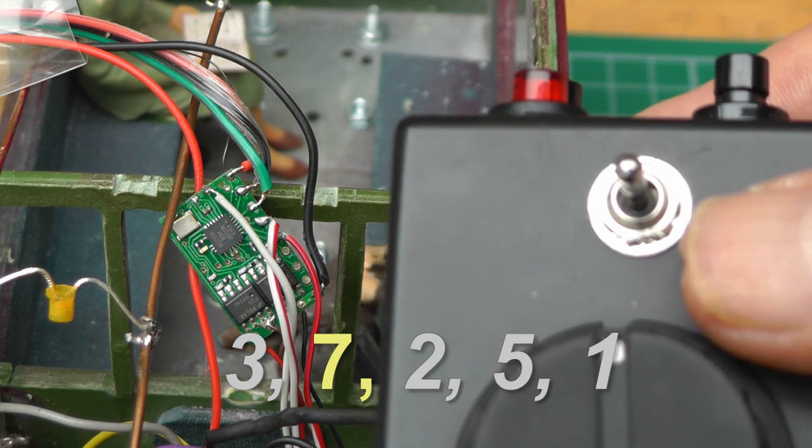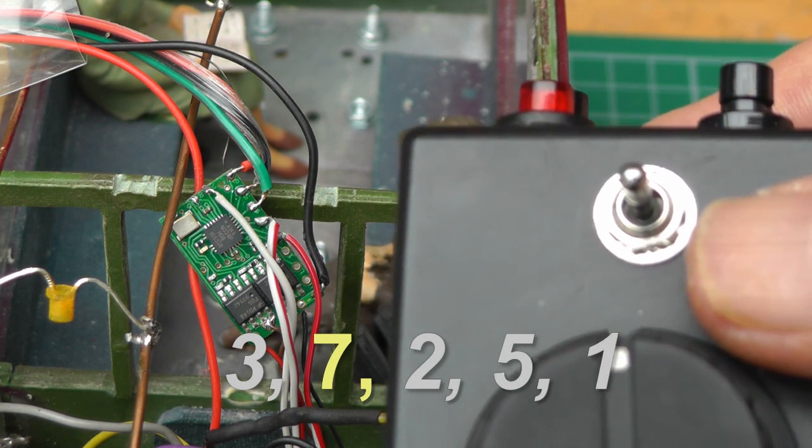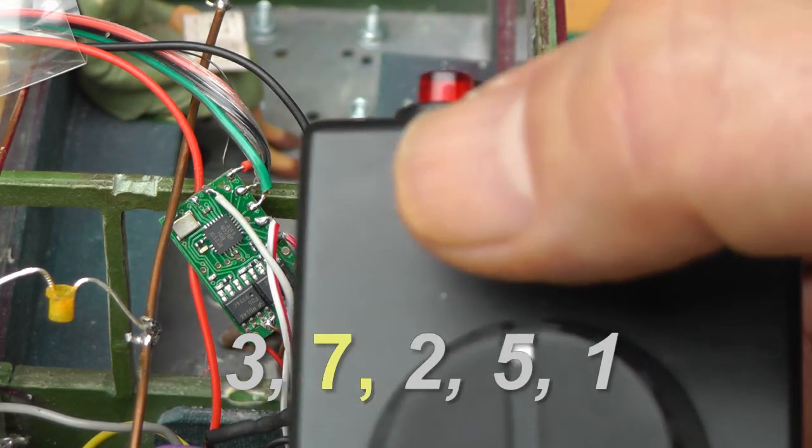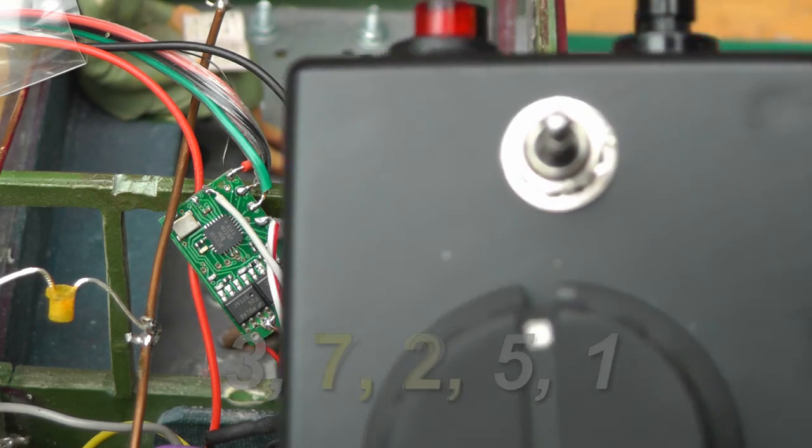And again, 1, 2, 3, 4, 5, 6, 7. So that's what I want. So I now turn the direction switch the opposite way to accept that.